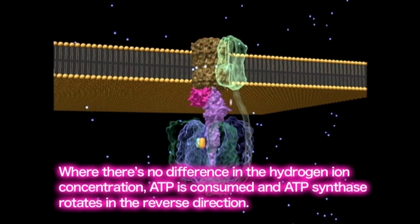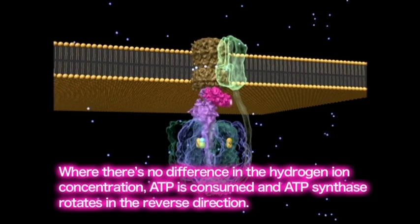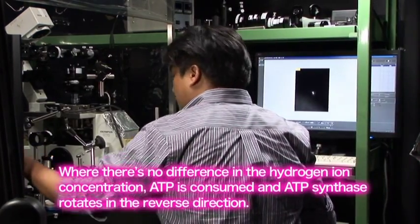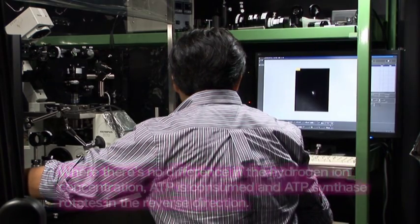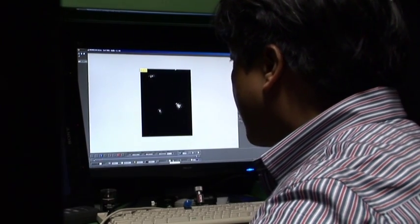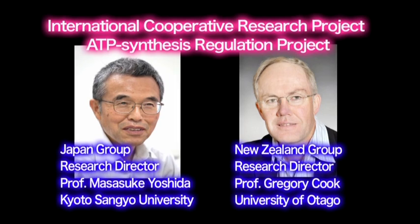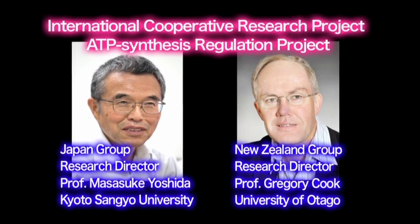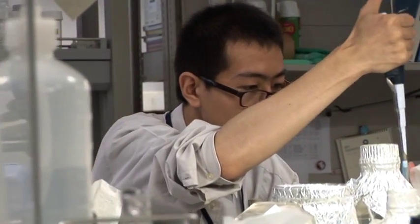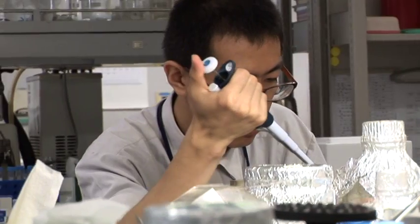When the difference in the concentration of hydrogen ions cannot be created for some reason, such as a state of starvation, some kind of mechanism should work to prevent the wasteful consumption of ATP that has been synthesized with so much effort under critical conditions. In cooperation with Professor Gregory Cook at the University of Otago in New Zealand, the ATP Synthesis Regulation Project at the Japan Science and Technology Agency has unraveled the regulatory mechanisms of ATP synthesis by carrying out enzymatic reactions one after another.